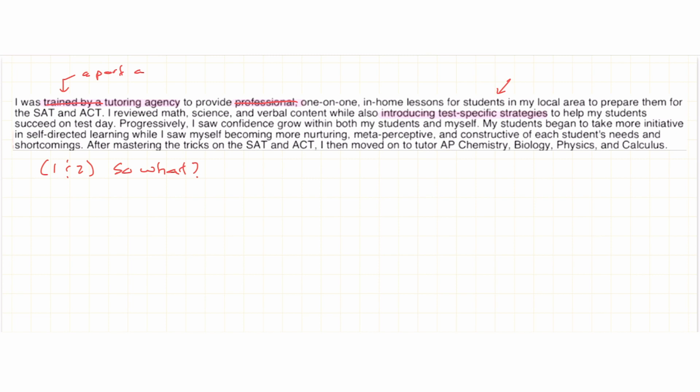The third sentence reads, progressively, I saw confidence grow within both my students and myself. When they said I saw confidence grow within both my students and myself, they never explained in the previous sentence or later why there was this increase in confidence. What I'm wondering here is, how are they different from anyone else who were at the tutoring agency? What I want to hear from this is, what did they specifically do to help their students' confidence grow, rather than just following a formulaic plan that was trained to them by the tutoring agency? Here, a more valuable use of space, I think, would be to describe what this growth in confidence looks like.